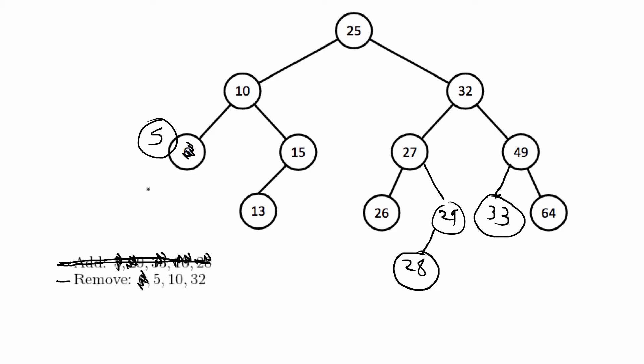To remove 5, 5 now is a leaf node and it has zero children so we could just remove 5 and we're done with that.